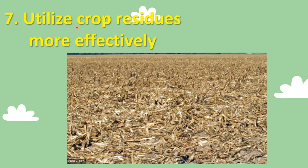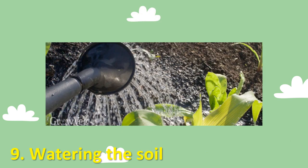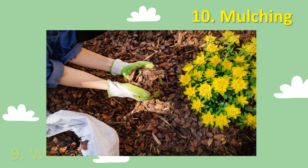Number seven, utilize crop residues more effectively. Number eight, utilize manure more effectively. Number nine, watering the soil — watering the soil along with plants growing in it is a way to prevent soil erosion caused by wind. Mulching is used to retain moisture in the soil, suppress weeds, keep the soil cool, and make the garden bed look more attractive.